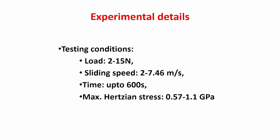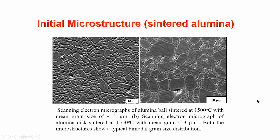The sliding test conditions used here: load is around 2 to 15 Newton, sliding speed is around 2 to 7.5 meters per second, time is up to 600 seconds, and maximum Hertzian stress is somewhere around 0.57 to 1.1 GPa. This is the sintered microstructure of alpha-alumina shown in a scanning electron micrograph — one specimen is the flat and one is the ball. You can see large tabular grains as well as a bunch of smaller, finer grains, with a typical grain size of around 1 to 3 microns.